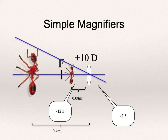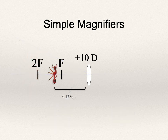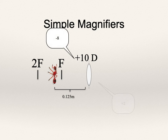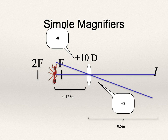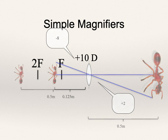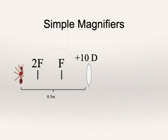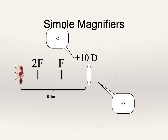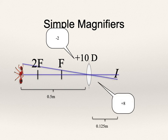Recap: between F and the lens — virtual, upright, magnified. Between F and 2F — real, inverted, magnified. Beyond 2F — real, inverted, minified.